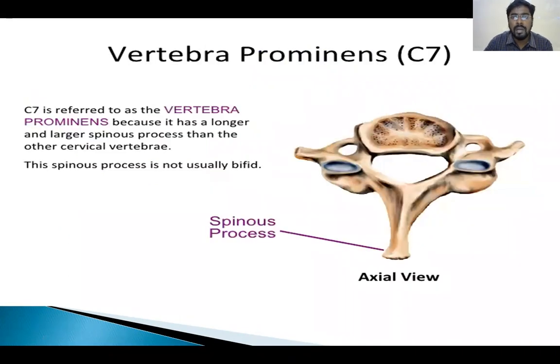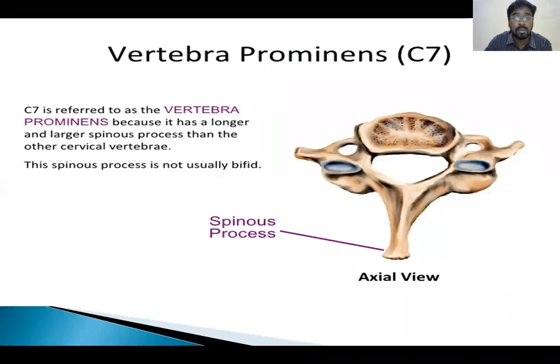C7 is also called the vertebra prominens because it has the largest or longest spinous process of the cervical vertebrae.